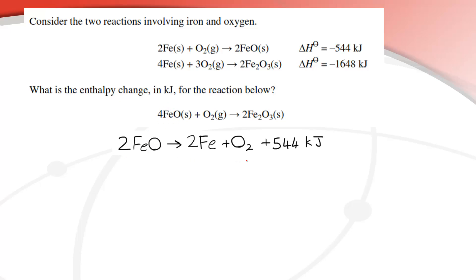So what I've done, I've flipped or reversed this equation here, and don't forget the enthalpy change as well. It was negative 544 kilojoules, it's now positive 544 kilojoules. Another thing is that the final equation has 4FeO, we only have two, so what we have to do, we have to multiply the whole equation by two.